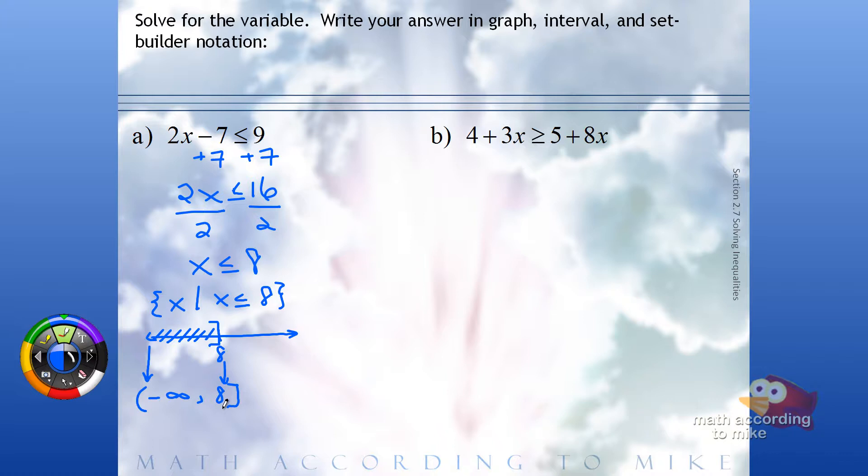Part B. We have a variable on both sides. We'd like to see the variable on the left, number on the right. So let's do this all in one step. To get the variable on the left, we would need to subtract 8x from both sides. To get the constant on the right, we'll have to subtract 4 from both sides.